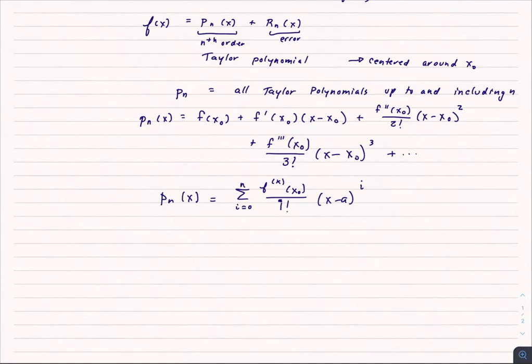that would be the entire function. So it's a summation from i equals 0 to n of f to the ith derivative, that's what those parentheses mean, evaluated at x0 divided by i factorial times (x minus a) to the ith power. And I've now rewritten it as x0 or a. Some books use a, so it would be rude of me to switch conventions in the middle of explaining this.